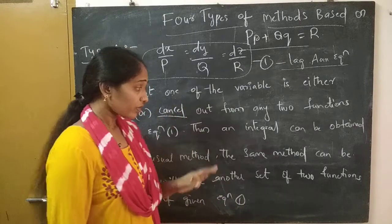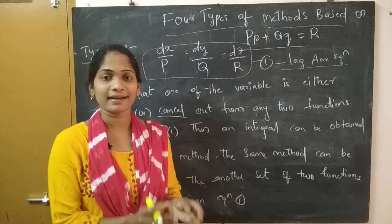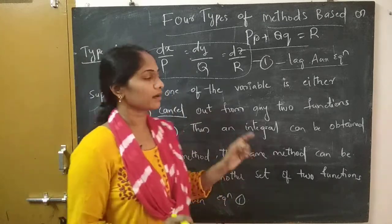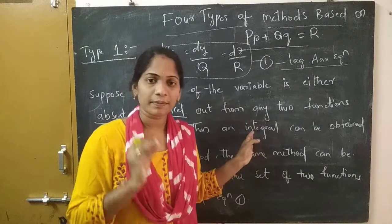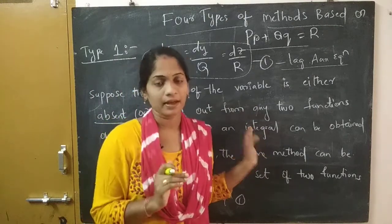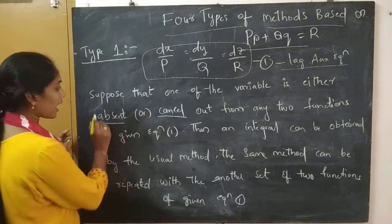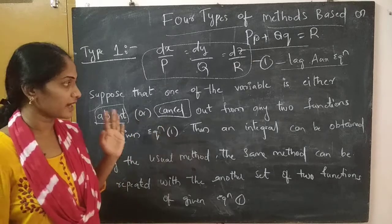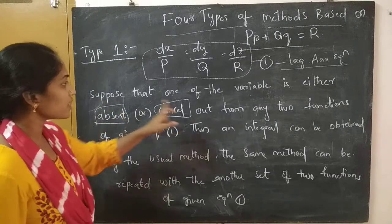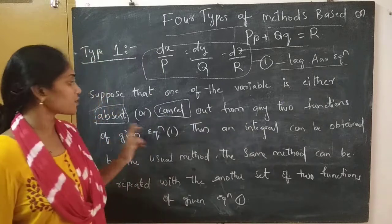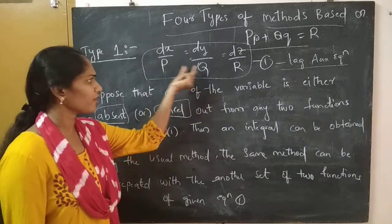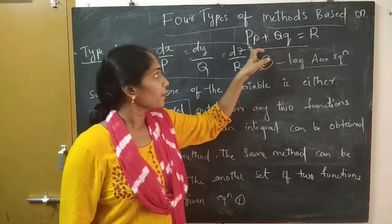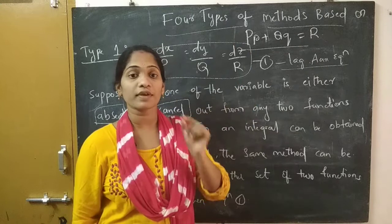Anything in mathematics cannot be made clear by just seeing a theoretical formula — it becomes clear by doing examples. But I want to say here that the words 'absent' and 'cancelled' play a very important role. Suppose that one of the variables is either absent or cancelled — what does that mean? The variables P, Q, R are functions of x, y, z as we already discussed in Lagrange's method.